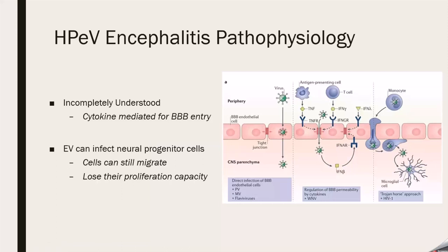Echovirus research has shown that it can infect neural progenitor cells through the suspected cytokine mechanism. Though the progenitor cells can be infected, their migration patterns are not impeded. However, they do lose their ability to proliferate inside the CNS.